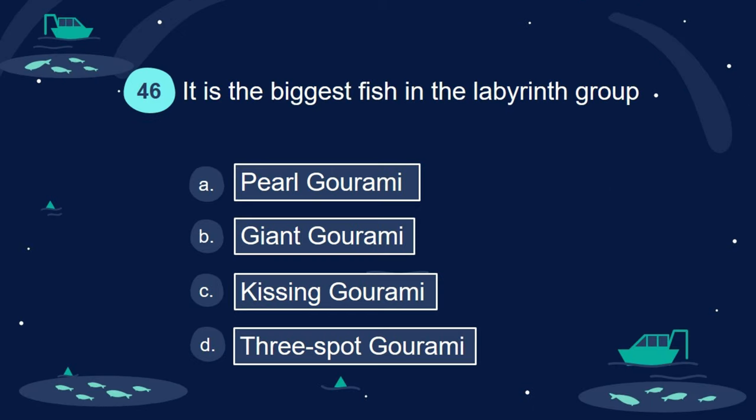Question 46. It is the biggest fish in the labyrinth group: A. Pearl gourami. B. Giant gourami. C. Kissing gourami. D. Three-spot gourami.